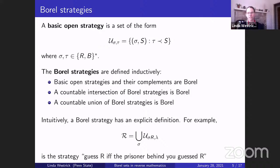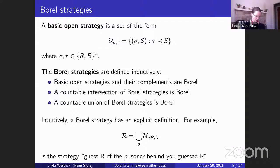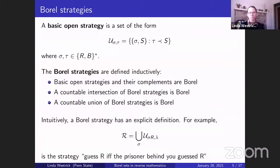We define a basic open strategy, parameterized by two finite strings: σ (guesses heard) and τ (guesses ahead). The strategy says: guess red if you heard σ and the hats you see extend τ — that is, τ is an initial segment of s — and guess blue otherwise. This strategy alone won't be a winning one, but we can use it as a building block.